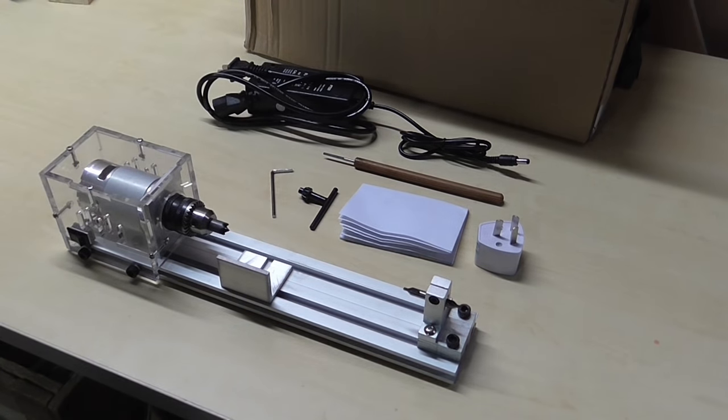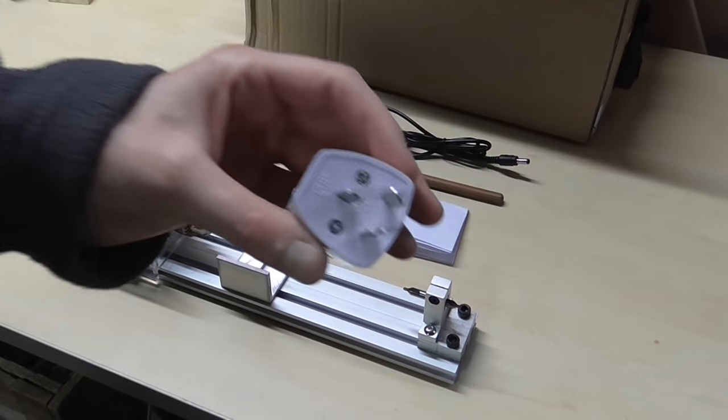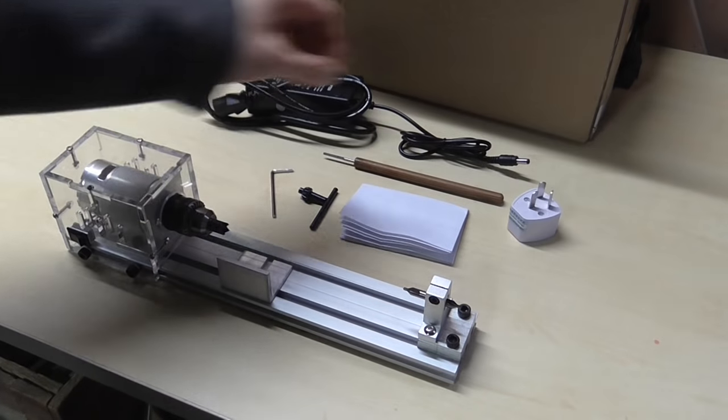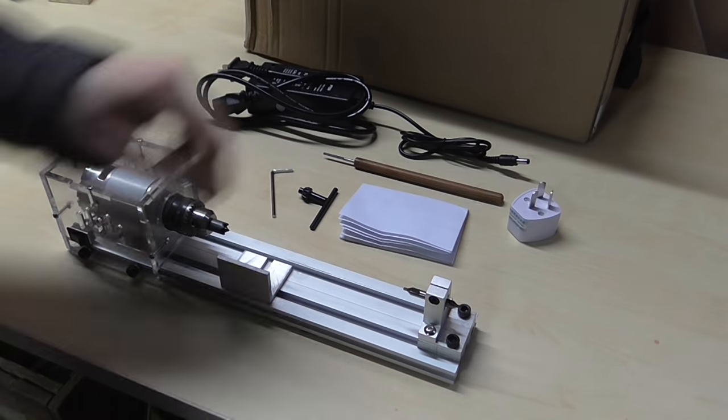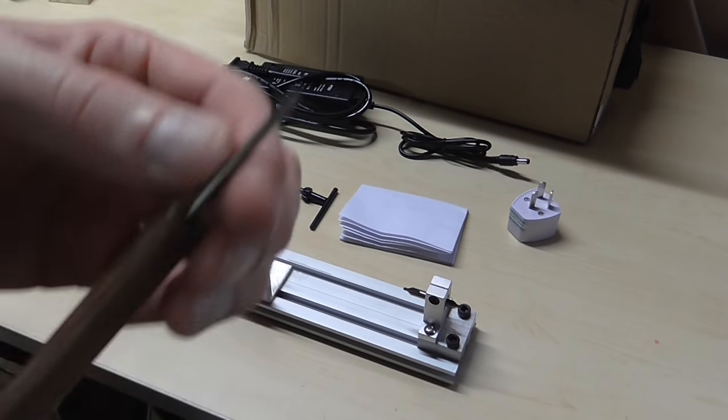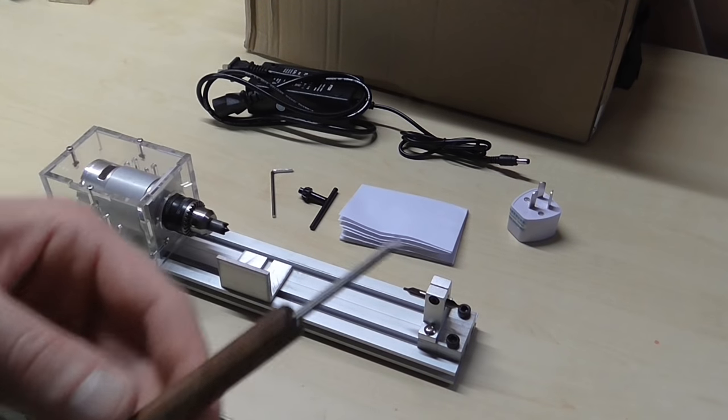So this is all the stuff that it comes with in the box. You've got the power cable as well as an adapter for an Australian 3-pin plug, which is nice because I thought I'd have to buy my own. You get a tiny little chisel with it which looks like a very well made tool, but it's pretty small.